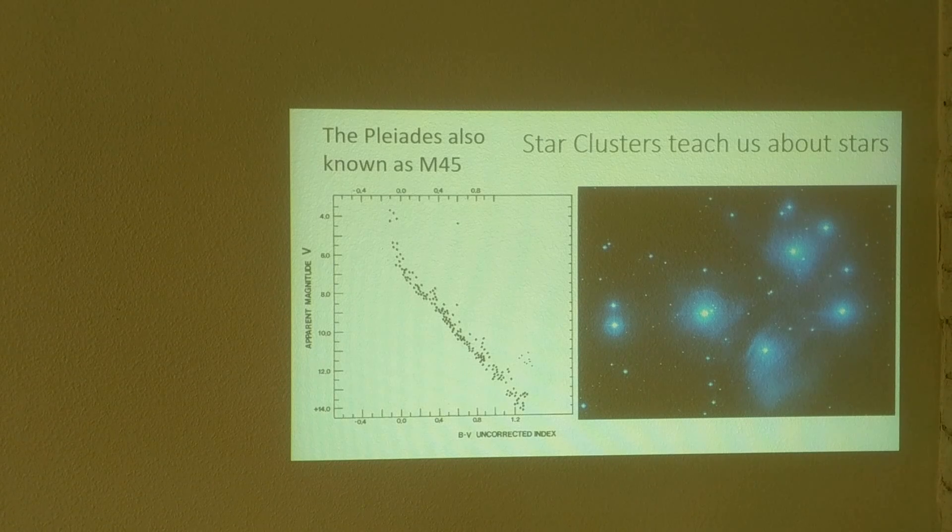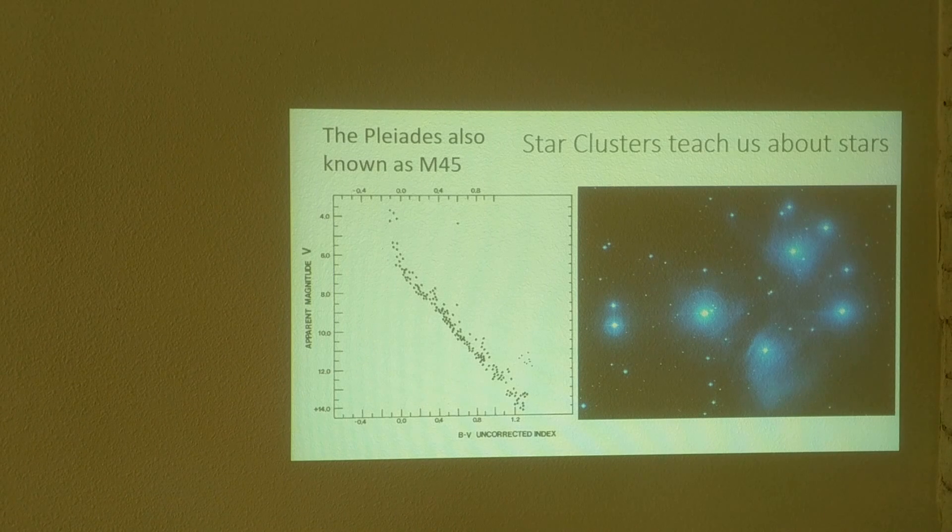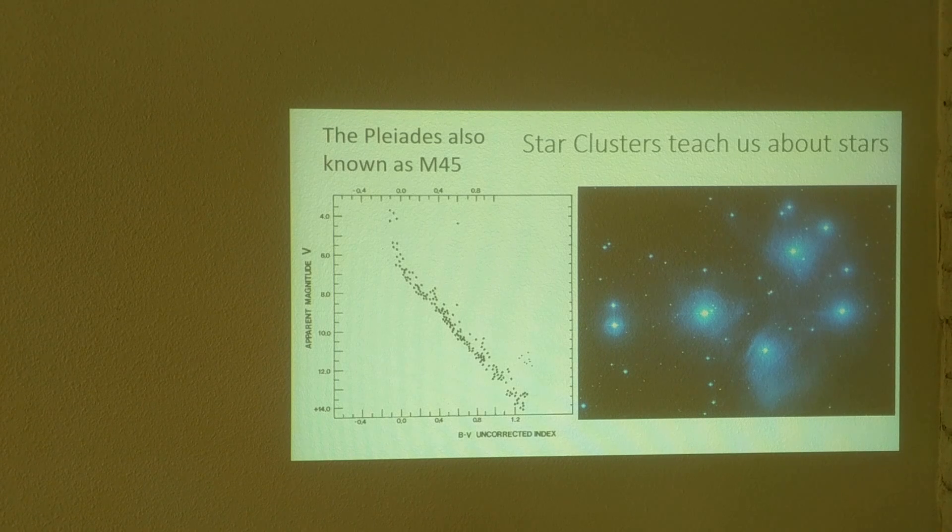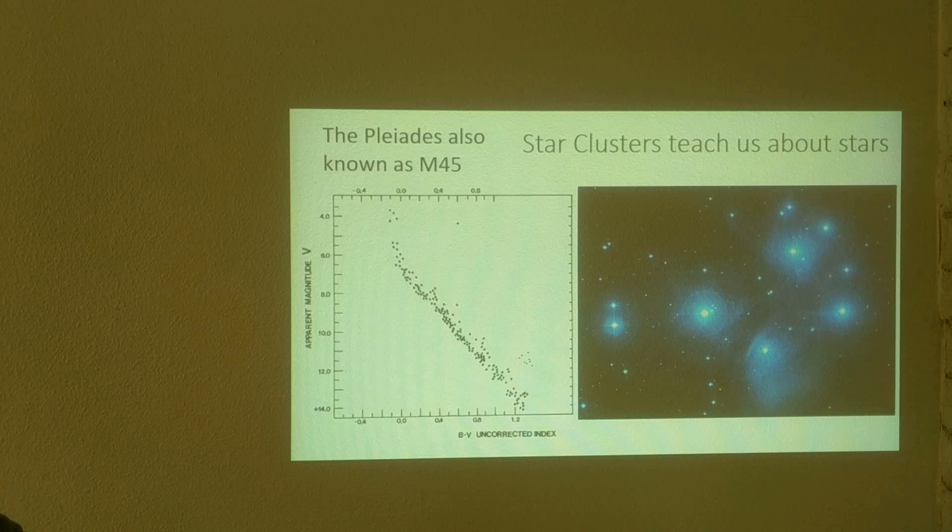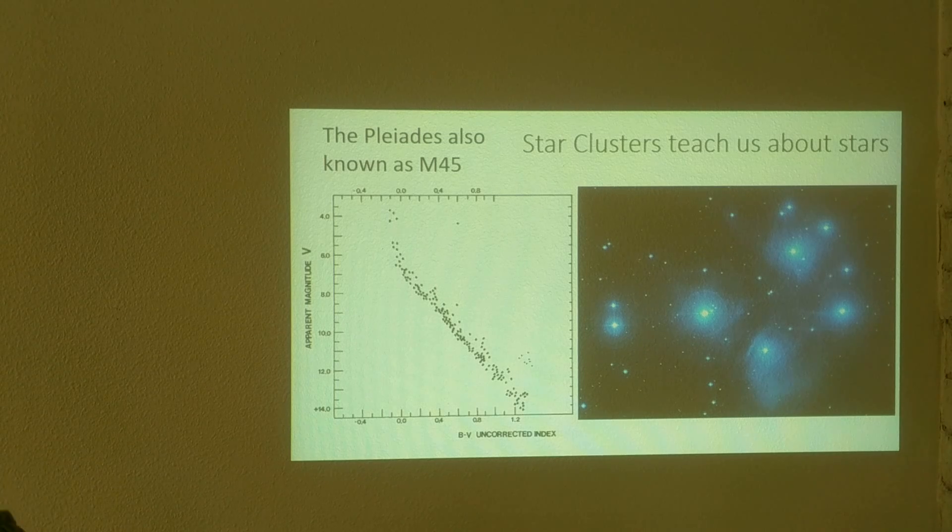Something else, we look at other kinds of clusters and we plot only the stars from the cluster. These are called color magnitude diagrams. It's effectively the same thing as the HR diagram, but we don't involve the distance because all the stars are the same distance.